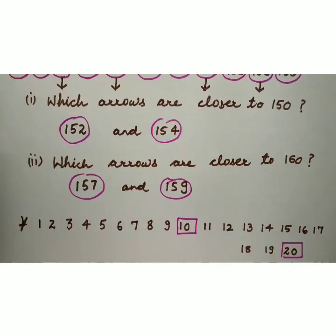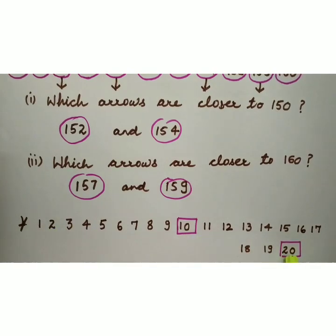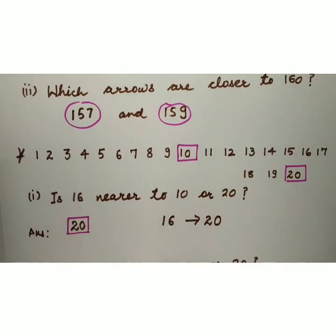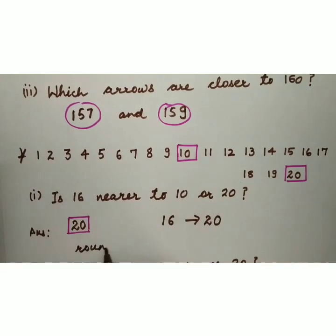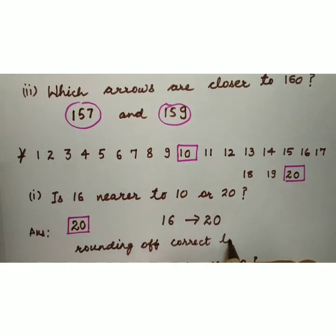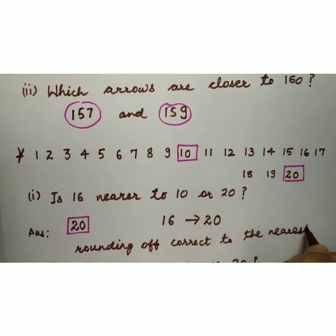Now let us take one more example. We have numbers from 1 to 20. We have marked 10 and 20. First part, is 16 nearer to 10 or 20? Kyunki 16, 20 ke zyadha closer hain. So we will write 16 rounds to 20. And we will write this as rounding off, correct to the nearest tens.